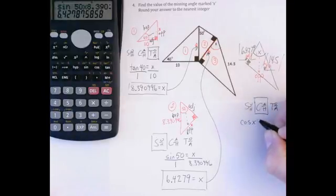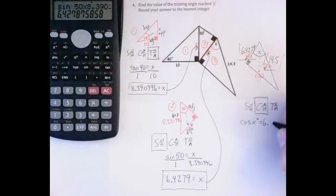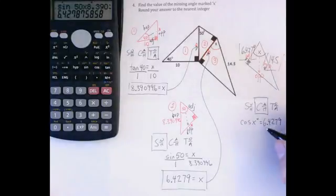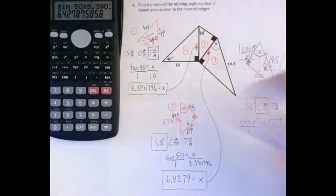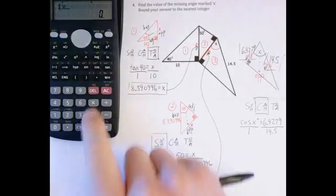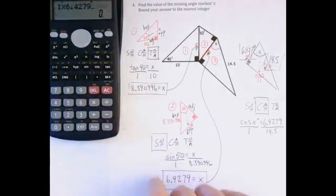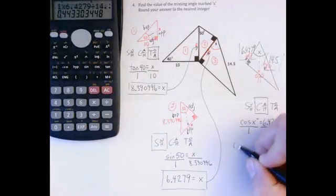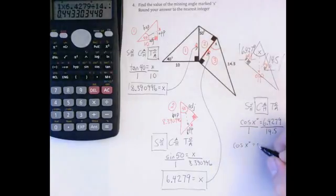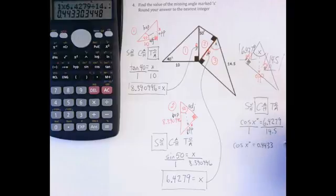So if I write that out, the cosine or cos of X degrees is equal to adjacent divided by hypotenuse. Again, just out of habit, I'm going to create equivalent fractions by putting that side over one, multiply my diagonals, divide by the other. So I've got 1 times 6.4279 divided by 14.5. That equals, cos of X degrees equals 0.443303448.